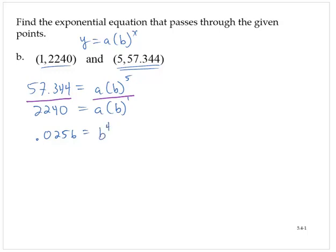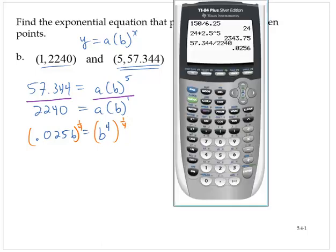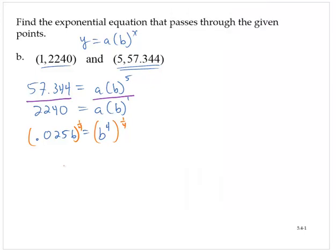This is a power equation. Raise both sides to the 1 fourth power. Taking the answer and raising that to the 1 fourth power gives me 0.4. So b is 0.4.